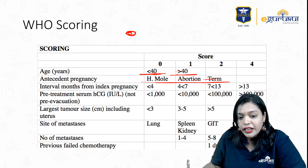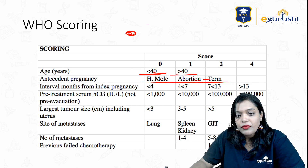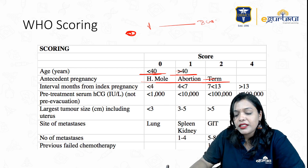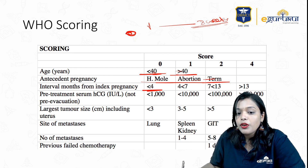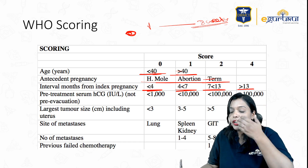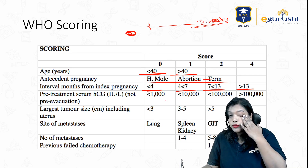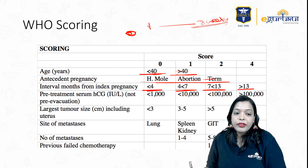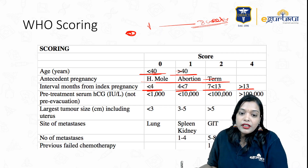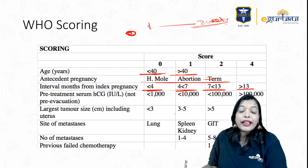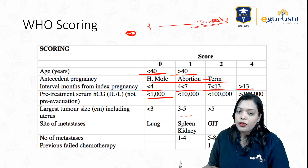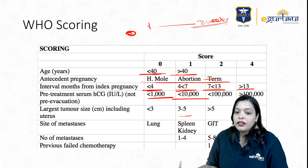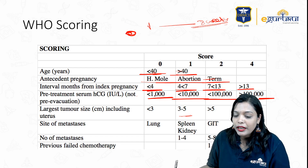Interval months from the index pregnancy: our patient was only 8 weeks after molar evacuation when beta-HCG rose, presenting as choriocarcinoma. Interval less than 4 months gives a score of 0; 4 to 7 months scores 1; 7 to 13 months scores 2; and more than 13 months scores 4. Pre-treatment serum HCG levels: in this patient it went up to 2 lakhs. Less than 1000 scores 0; less than 10,000 scores 1; less than 1 lakh scores 2; more than 1 lakh scores 4.